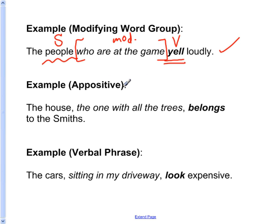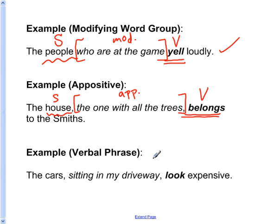We can also have an appositive in between the subject and verb. In this example: The house, the one with all the tall trees, belongs to the Smiths. The main verb is belongs and the subject is house. In between the subject and verb is an appositive. In this appositive is the word trees. Trees is plural. If we thought trees was the subject, the verb would be belong — and that would be incorrect. The correct sentence reads: The house, the one with all the tall trees, belongs to the Smiths.